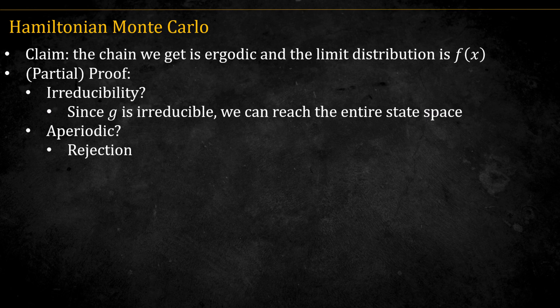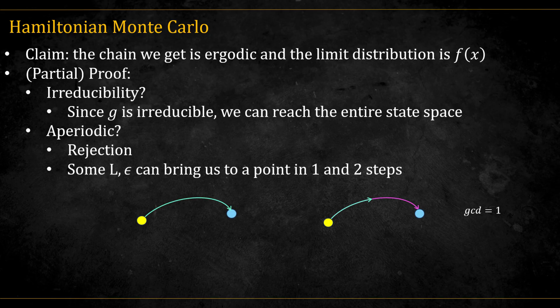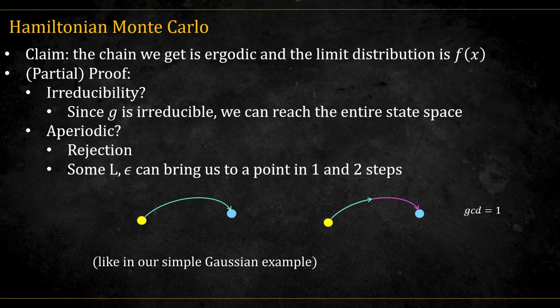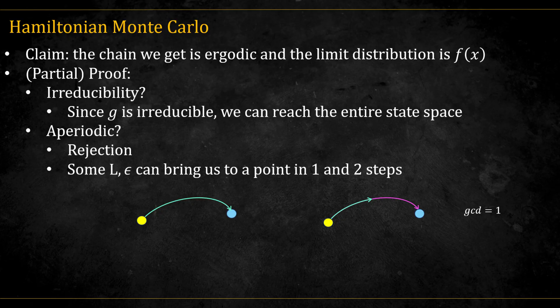Aperiodicity: One way to get this is through rejections. If a proposal is rejected, we stay at the same point. But even in the idealized case where all proposals are accepted, randomizing the integration time breaks periodicity. For example, suppose we reach some blue point in one step with integration time t. If there's also a chance we reach the same point using two steps of half t, then we have return times of two consecutive numbers, ignoring how many steps it took to get from the blue point to the yellow point. Since their greatest common divisor is 1, the chain is aperiodic. Also, in some simple cases, the dynamic trajectories are closed loops, and then we have the possibility of returning to the same point in one step. This might not always be the case, though.